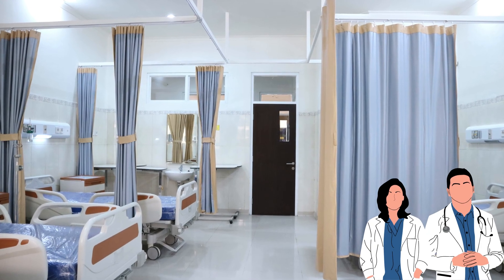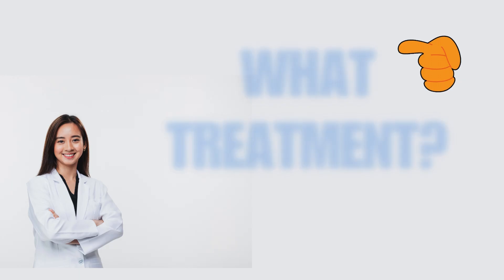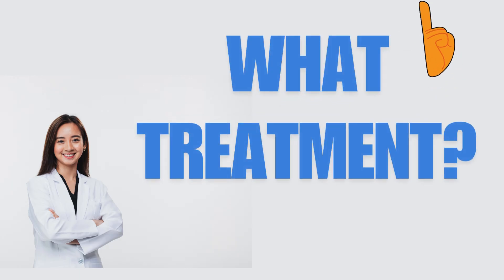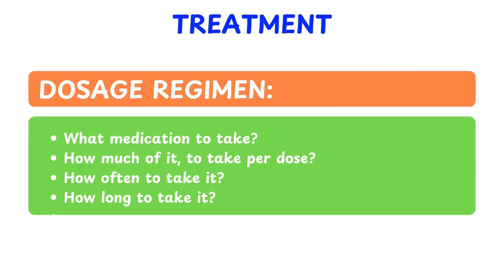Imagine you are at a hospital and there is a patient in the ward. The patient has been diagnosed with pneumonia, and you need to decide on a treatment plan. To create an effective dosage regimen, we need to answer four essential questions: What medication should the patient take? How much should be taken per dose? How often should the medication be taken? And how long should the medication be taken?